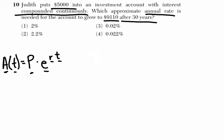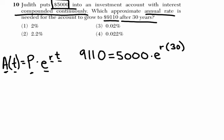So we know our principal balance is $5,000. So it's $5,000 times E to some rate, that's what we don't know, we know it's 30 years, eventually it's going to get to $9,110. So we have to solve for our variable R, we have to solve for this value right here. How do we do that?